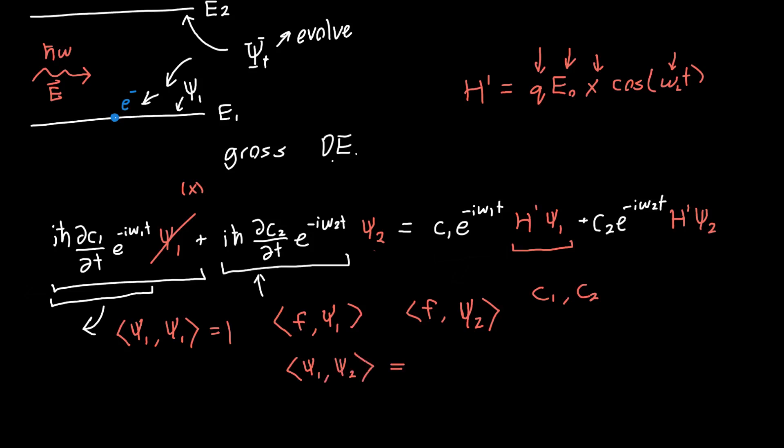Similarly, for this second term, we can pull out all these functions of time out front, and we just need to take the inner product of psi 1 with psi 2. We know that since these functions are orthogonal, this is equal to 0. So this whole term goes away, and thank goodness, because we don't need any more of these monsters roaming around than absolutely necessary.